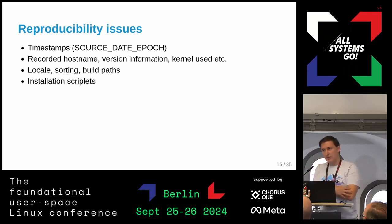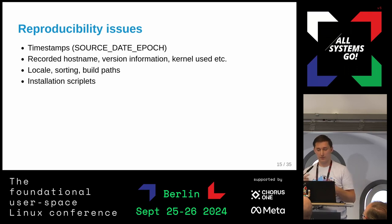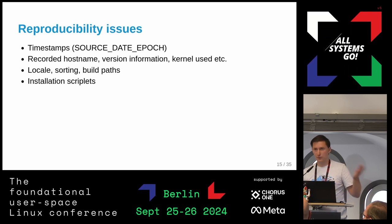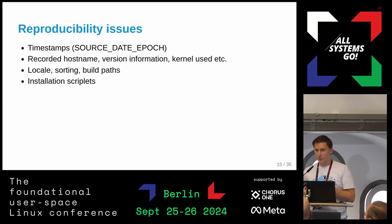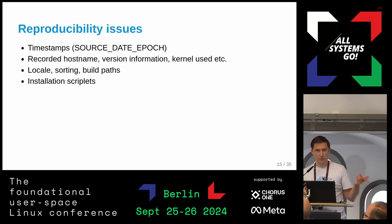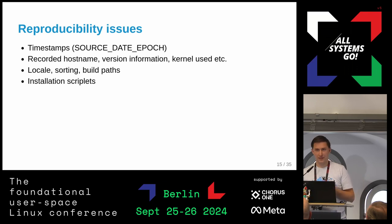Usually there are three categories of reproducibility issues, but we're packaging four. One is timestamps — for that we have `SOURCE_DATE_EPOCH`, an environment variable set to an epoch value; if a build tool emits a release date or build time, it gets replaced with this variable so the timestamp is the same as the previously built one. Another issue is recording the hostname or kernel used. Then there are filesystem sorting issues, build paths which differ per machine, and finally post-install scripts which can produce random non-reproducible output.